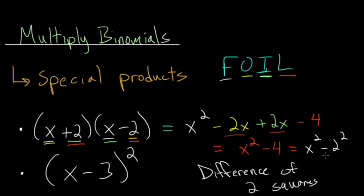We have a difference — subtraction — and two numbers squared, hence the name. The main idea is that if you have x plus something times x minus that same number, the middle terms will always cancel out, as long as the first term is the same in both and you're adding or subtracting the same term in both.